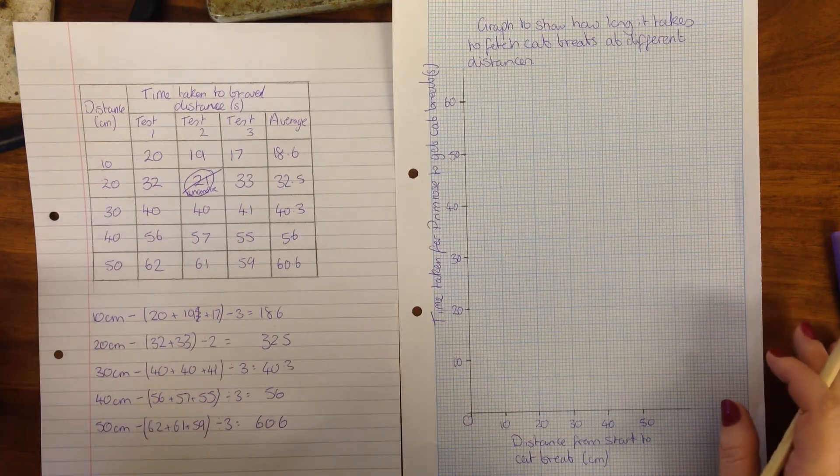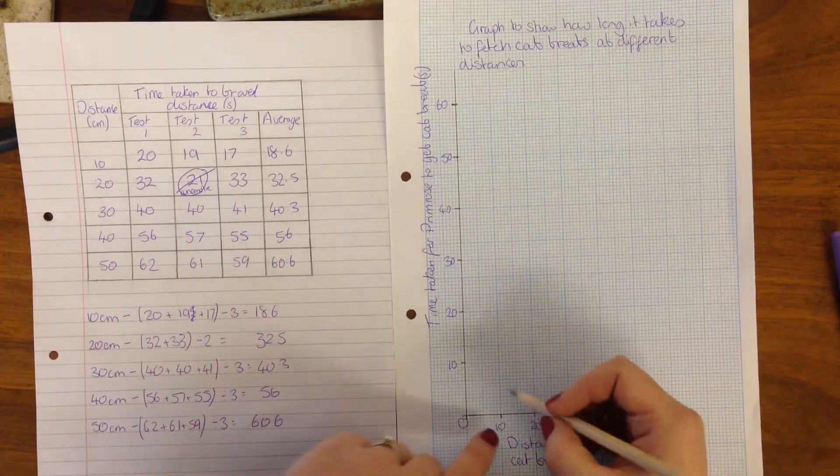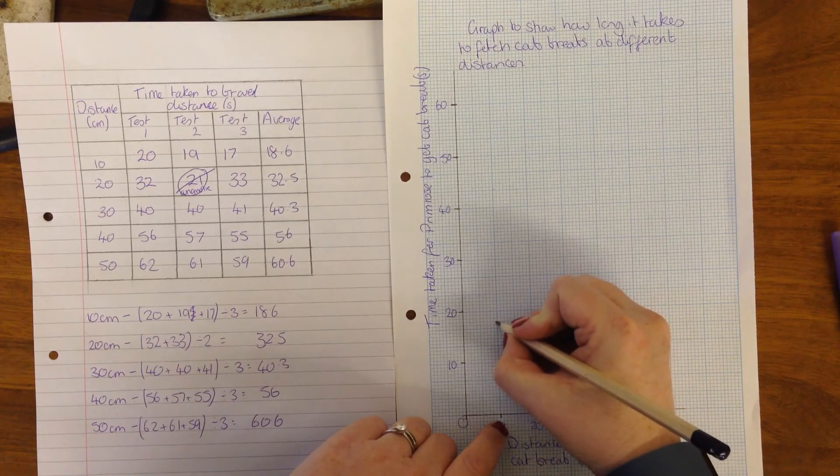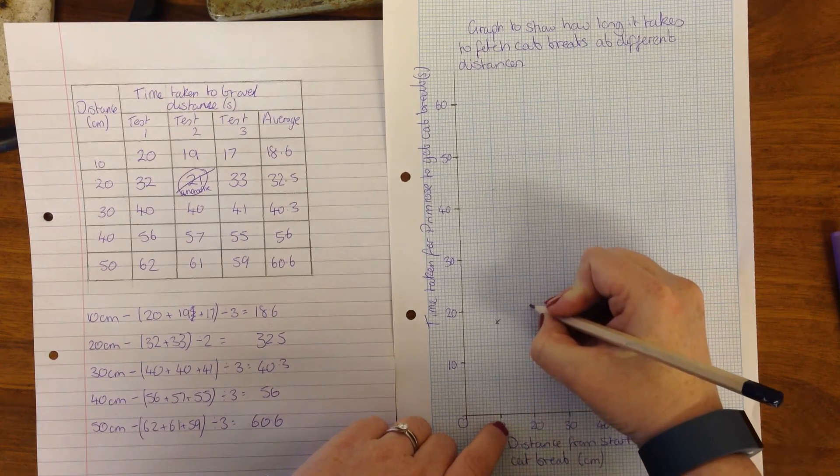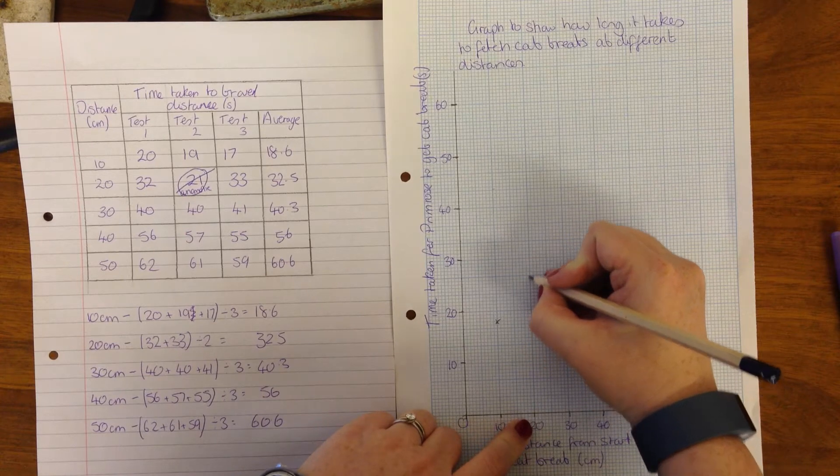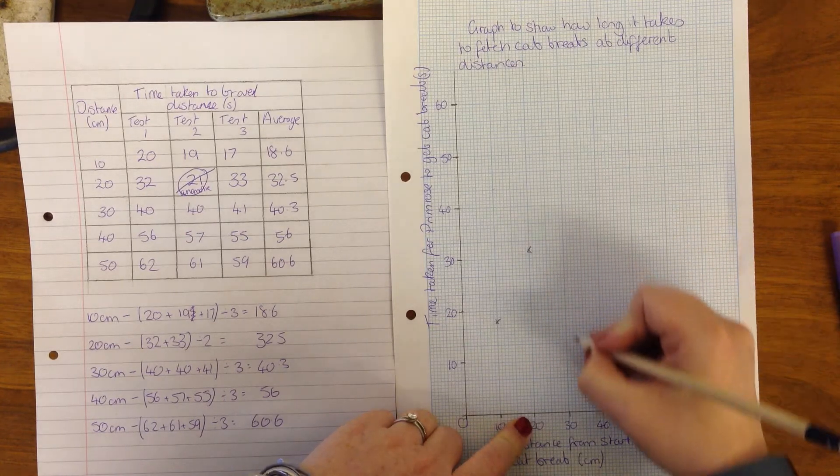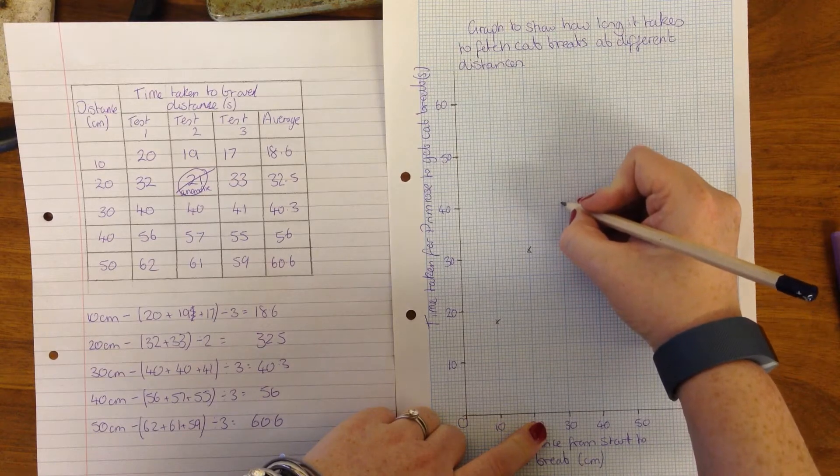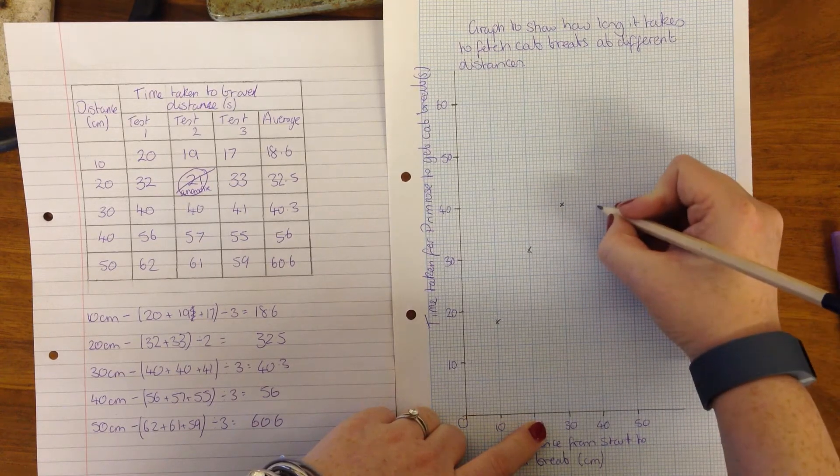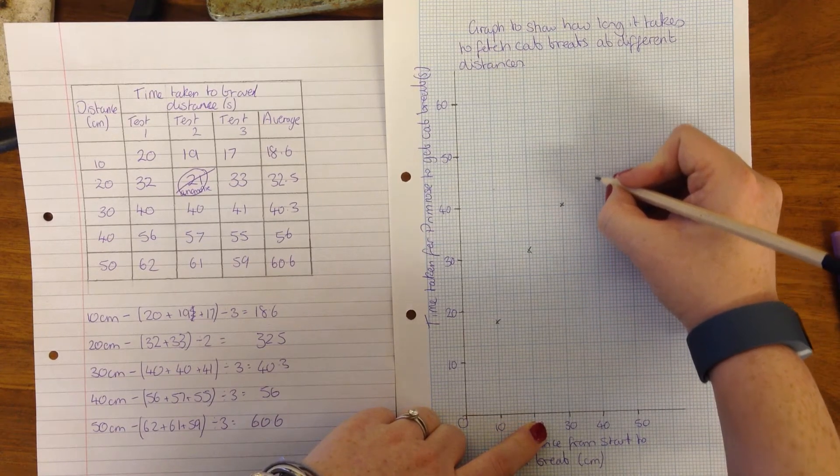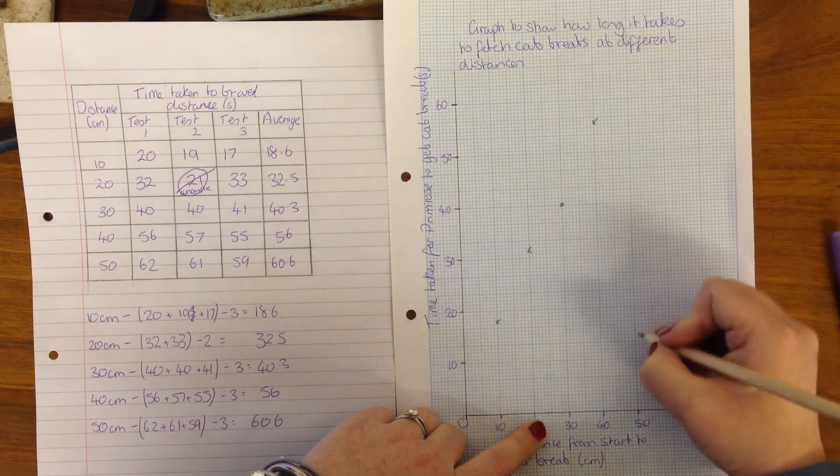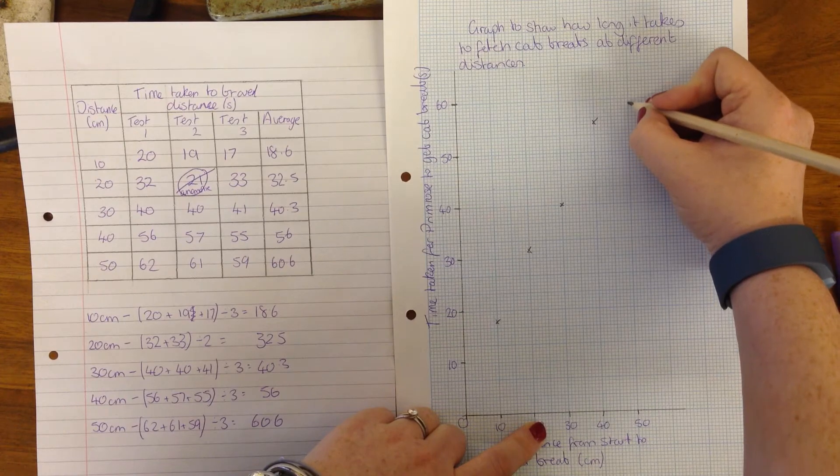So at 10 seconds it was 18.6, at 20 centimeters it was 32.5, at 30 centimeters it was 40.3, 40 centimeters was 56, 50 centimeters was 60.